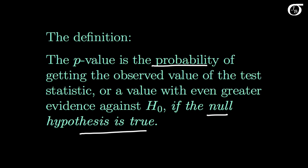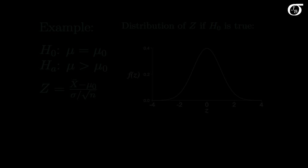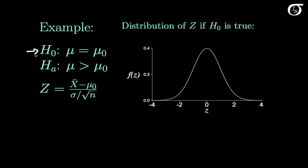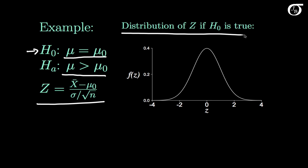Let's look at a few examples of finding the p-value. Suppose we wish to test the null hypothesis that the population mean mu is equal to some hypothesized value mu0, and the alternative hypothesis is that mu is greater than mu0. We are sampling from a normally distributed population where the population standard deviation sigma is known. Then this is the appropriate test statistic, and if the null hypothesis is true and mu actually equals mu0, this statistic will have the standard normal distribution.